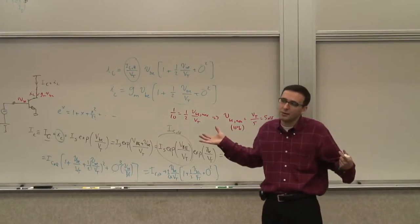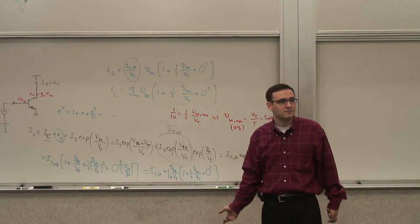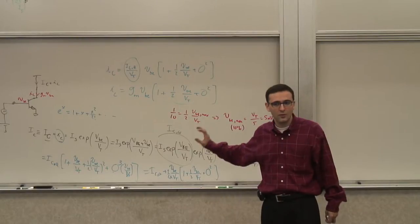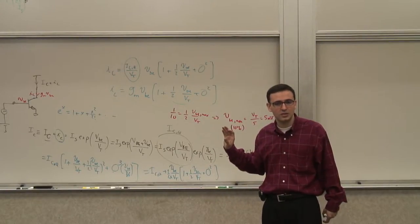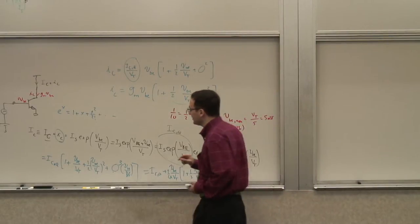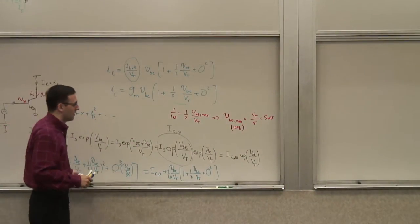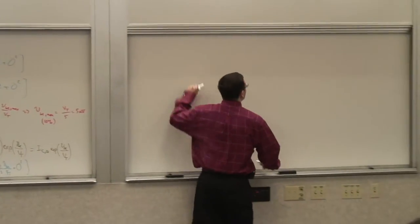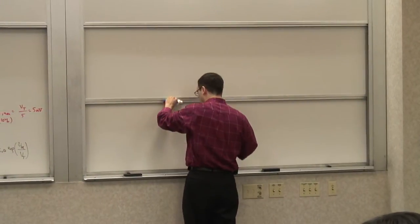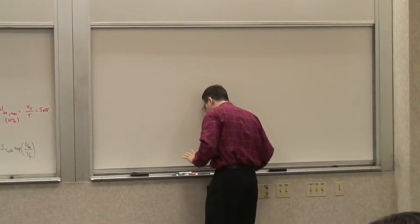That's another reason why the small signal model is important: we can use it to linearize the circuit around the operating point and then do frequency response, noise analysis, and all those things. For noise it makes perfect sense because the signal is already very small. But you have to understand where it comes from and what the different approximations are.